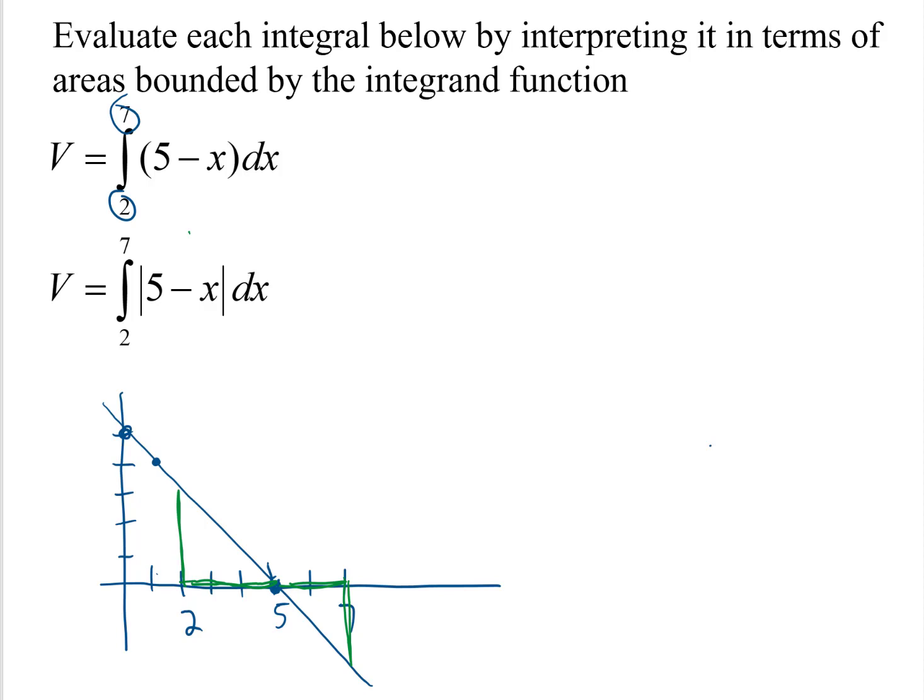So the area in the triangle above the x-axis would be, looks like it has a base of 3 and a height also 3. We could put 2 in the function there and see that that's 3. And so this area is 1 half the base times the height, so that would be 9 halves.